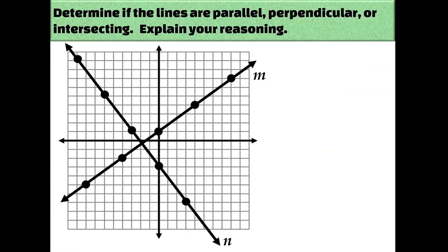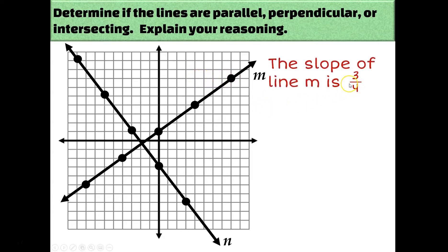Same idea on the next example. We need to determine whether these lines are parallel, perpendicular, or just intersecting. Let's count the slope of line m: I go up three and to the right four, so the slope of line m is three over four. The slope of line n: I go down four and to the right three, so that would be negative four thirds.